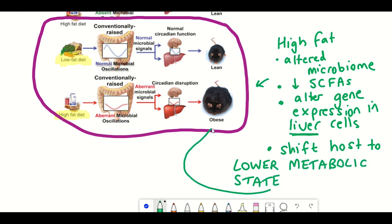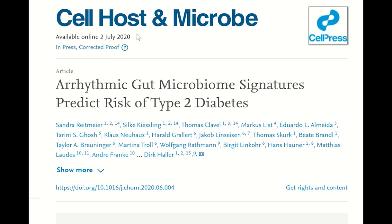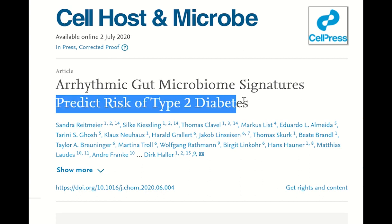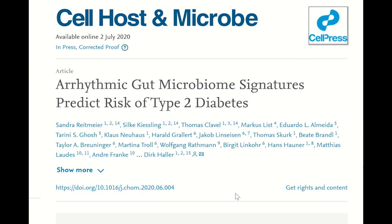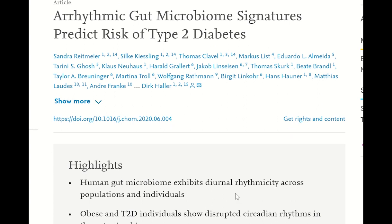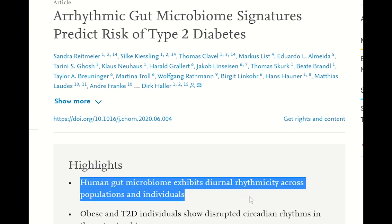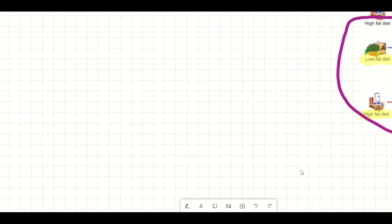But these studies so far have been done in mice. What about humans? Well, a study has shown that there are also diurnal variations in the microbiome composition in humans. And similarly, these cyclic variations can be dampened by different diseases. For example, in this study, they showed that patients with type 2 diabetes had a reduced oscillation in some microbial species.